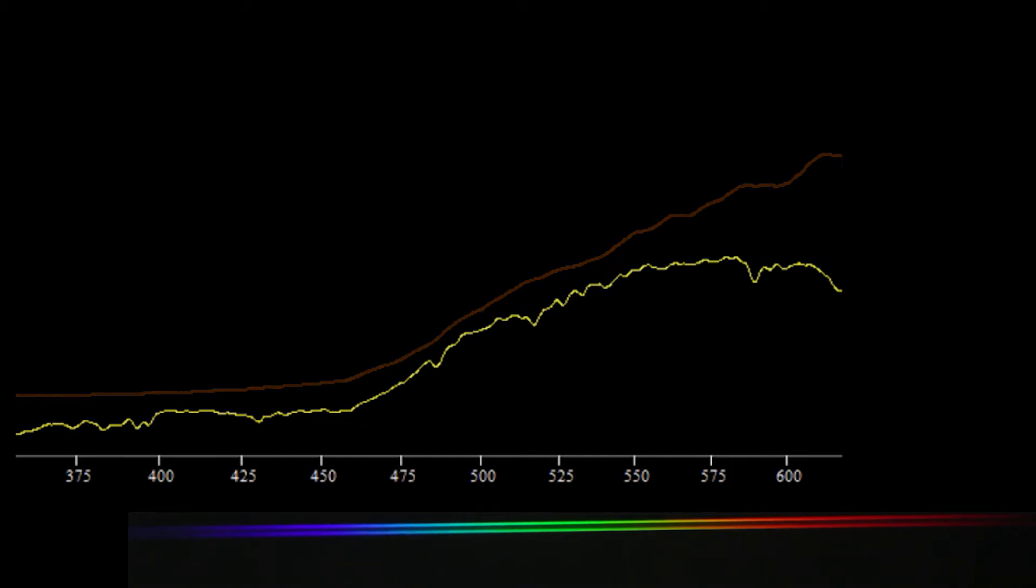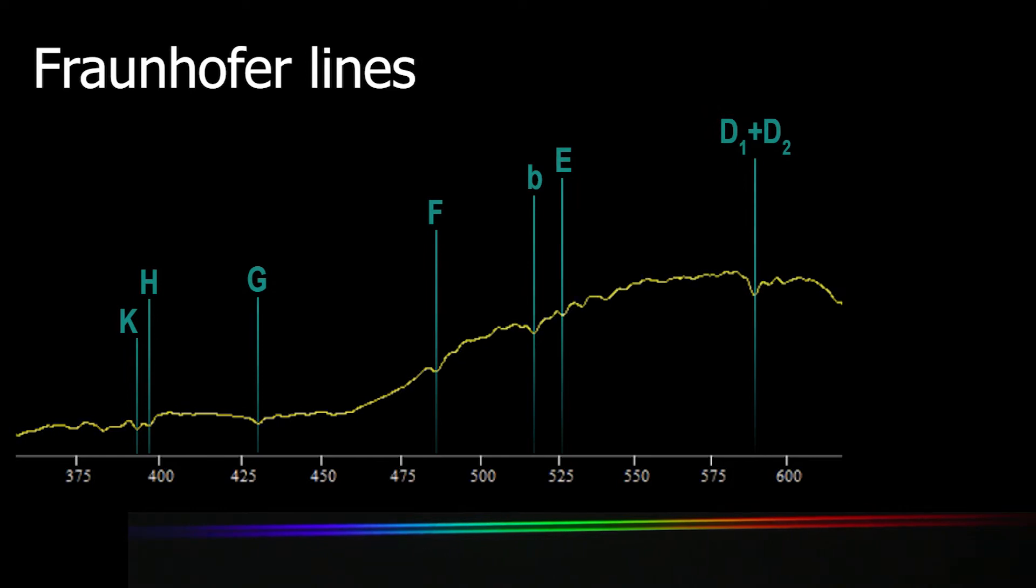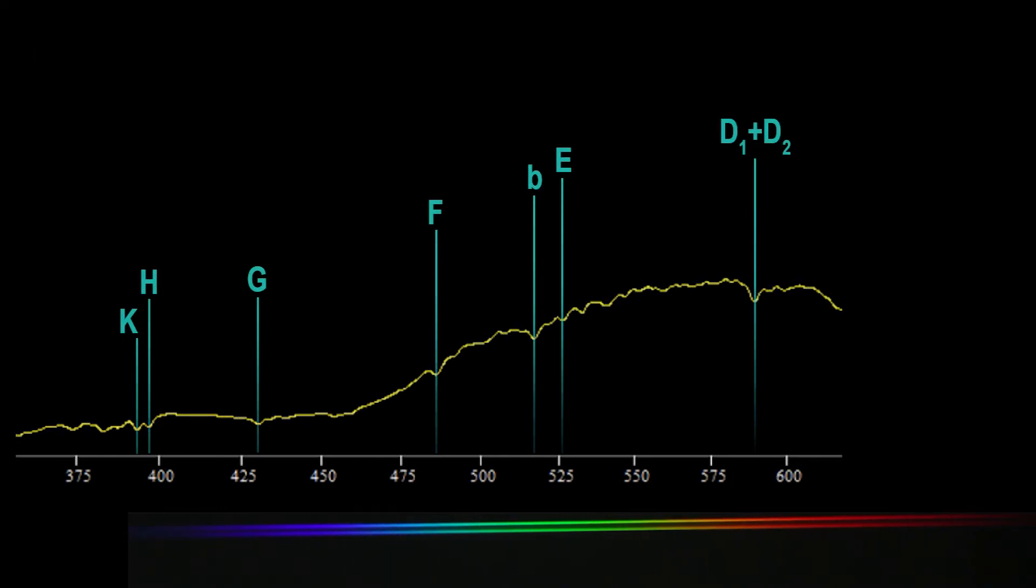But if we look closely, we can see these tiny notches here and there in solar spectrum. These notches are so-called Fraunhofer lines. Each absorption line can be viewed as some energy subtracted from a solar spectrum by atoms to switch between their electron orbitals.